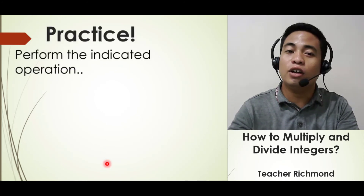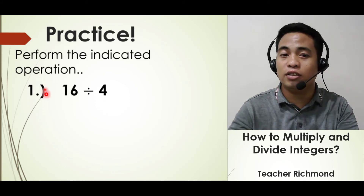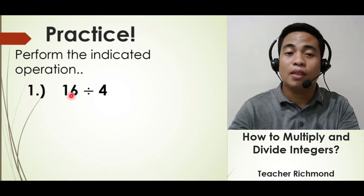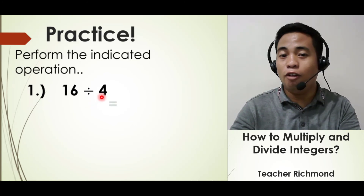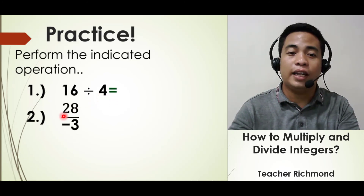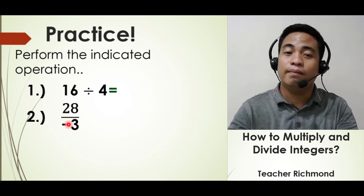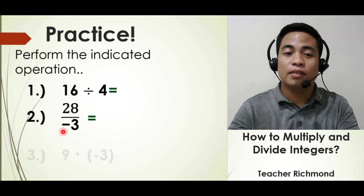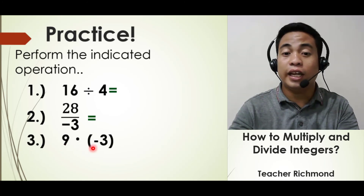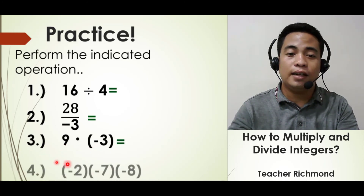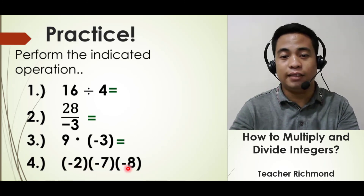Now it's your turn to perform the indicated operations. First: positive 16 divided by positive 4. Second: positive 28 divided by negative 3. Third: positive 9 times negative 3. Fourth: negative 2 times negative 7 times negative 8.